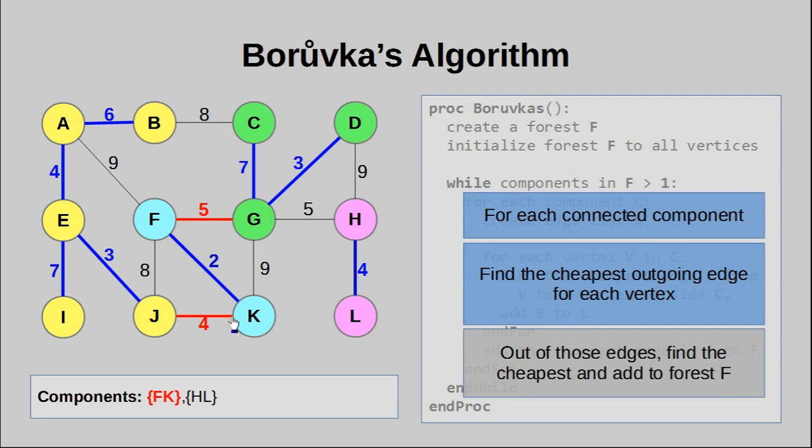Now, for the item F and K, well, these are the edges it needs to consider. Of course, we've already picked these edges in a previous pass. So yeah, we don't really have to do anything for this particular iteration. Finally, we look at the last connected component, HL. Of course, we look at the two outgoing edges. And we pick the smaller one of the two. So that would be this edge right here.